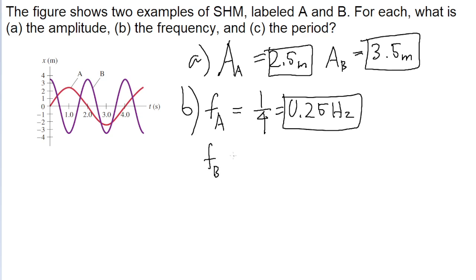Now we'll do the exact same process for the frequency of B. With B, we can see that one cycle is completed in 2 seconds. So function B completes one cycle every 2 seconds, which is 1 divided by 2, or 0.5 hertz.